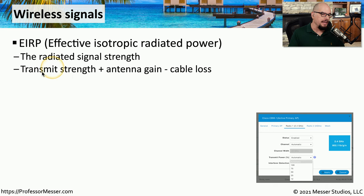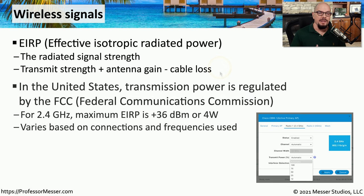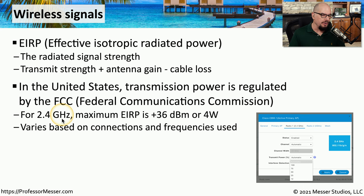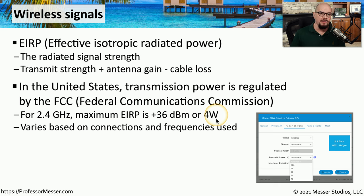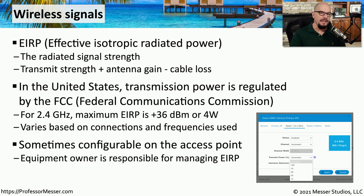EIRP is calculated by taking the transmit strength and antenna gain, then subtracting the cable loss. In the United States, the FCC (Federal Communications Commission) regulates how much signal you're able to send on access points. On a 2.4 GHz access point, for example, the maximum EIRP is 36 dBm, which is about 4 watts of signal. This can vary based on the bands and frequencies in use, and as the owner of the access point you are responsible for ensuring the EIRP does not exceed these values.